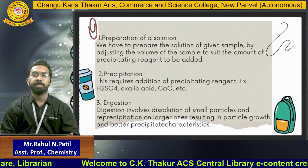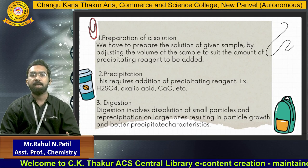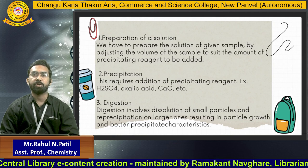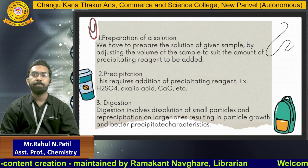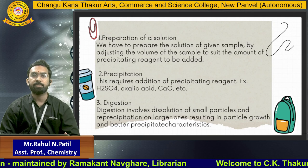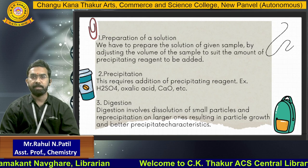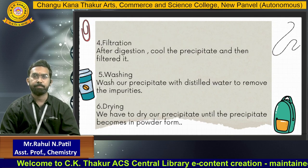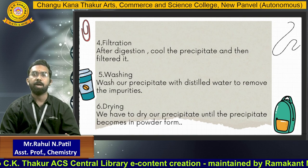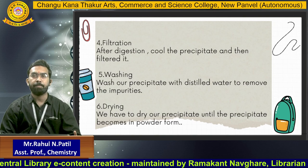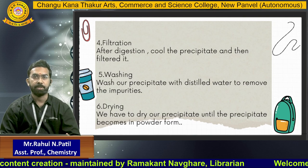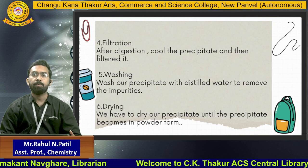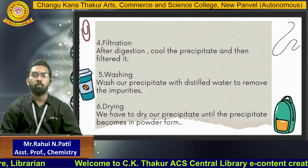Step three is digestion: digestion involves the dissolution of small particles and reprecipitation onto larger ones, resulting in particle growth and better precipitate characteristics. When digestion is complete, maximum yield of precipitate forms in the beaker or conical flask. Step four is filtration: after digestion, filter the precipitate using Whatman filter paper and a suction pump. Step five is washing: whatever quantity remains in the beaker is rinsed with distilled water and filtered again to remove impurities.